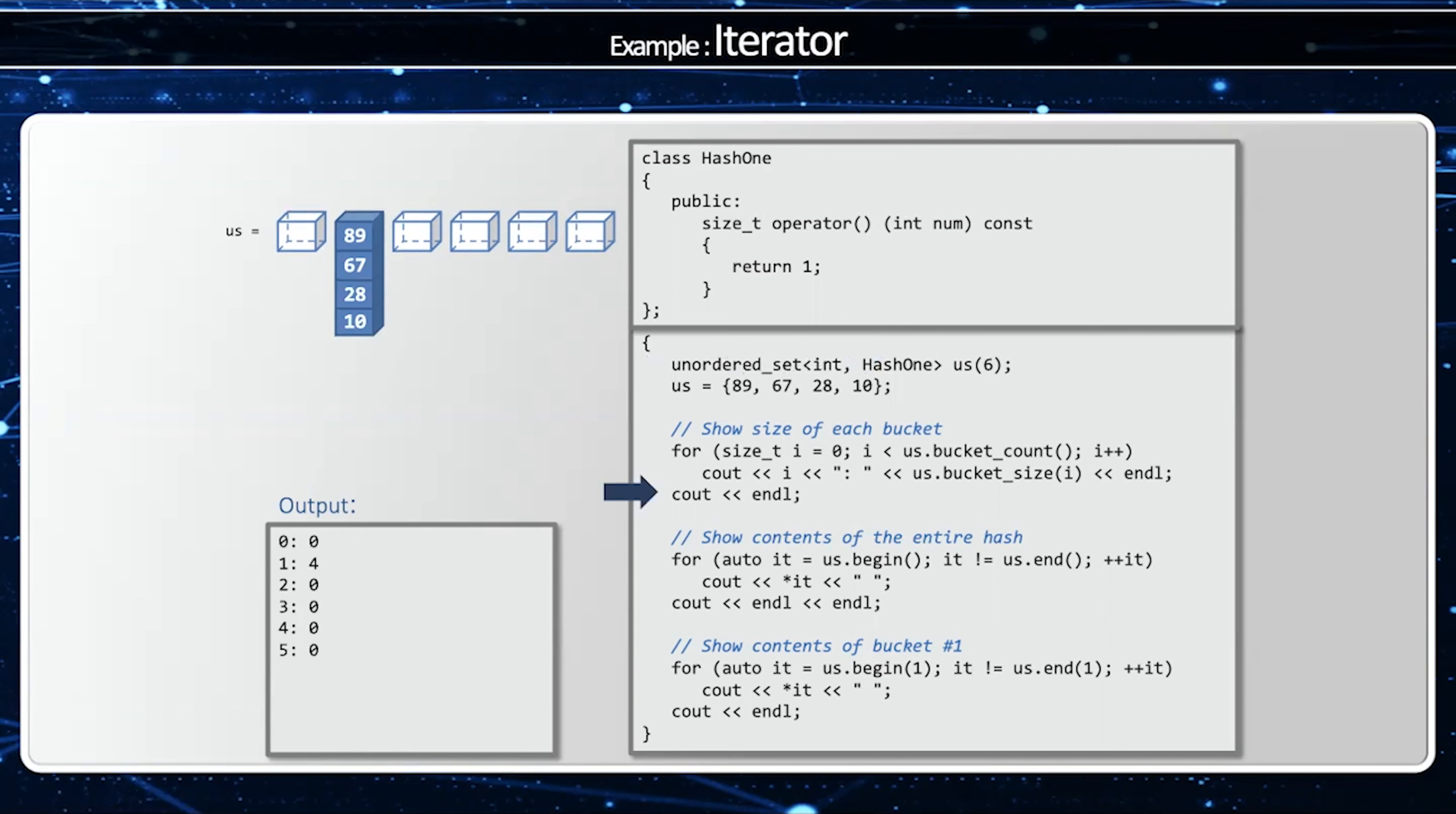So when I take a look at the size of each bucket it's going to say zero for all buckets but there's going to be four elements in bucket one. When I show the contents of the entire hash that's the same thing as showing the contents of bucket one which will be 89, 67, 28, and 10.